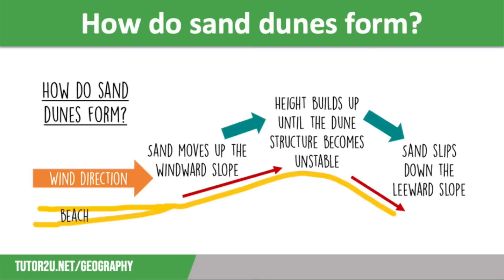Over time a crest will form on the side facing the wind, because the pile of sand has become very steep. This makes it unstable and causes the top of the dune to collapse under its own weight. After the collapse, the light grains of sand will slip down the leeward side — the side facing away from the wind — and they will keep slipping until the slope has reached an angle of about 30 degrees, at which gradient the slope is now stable.